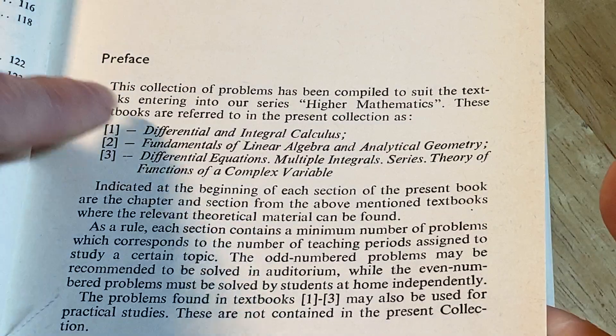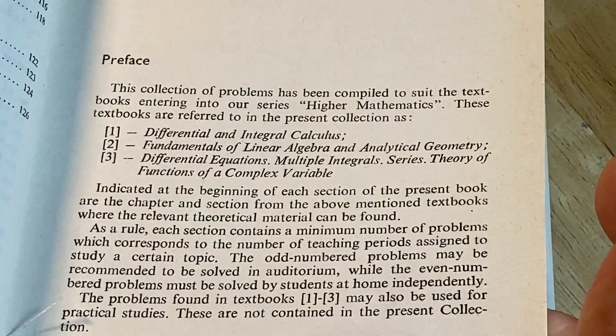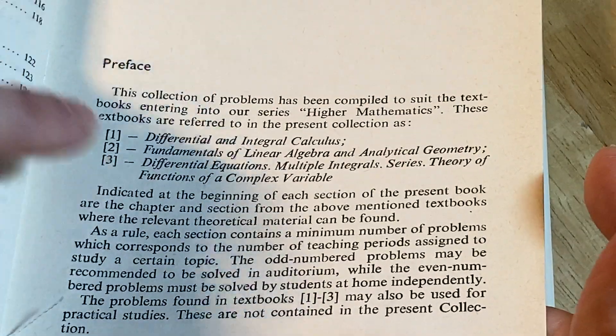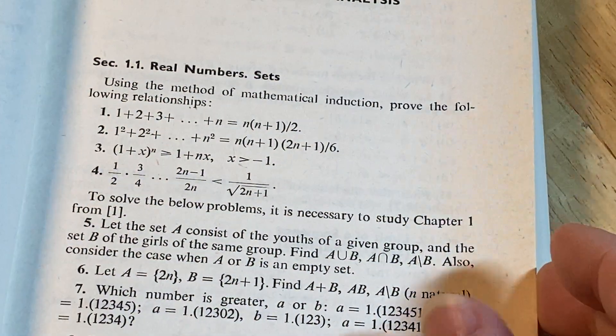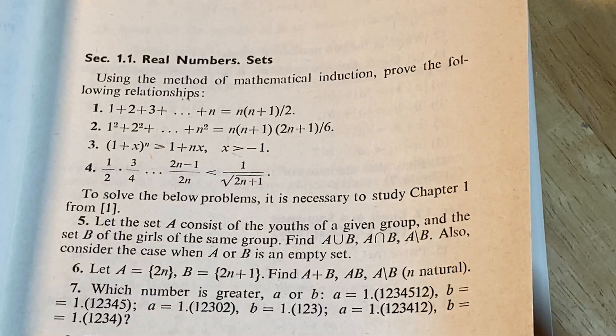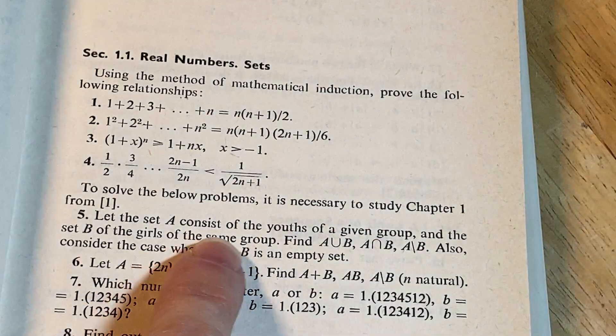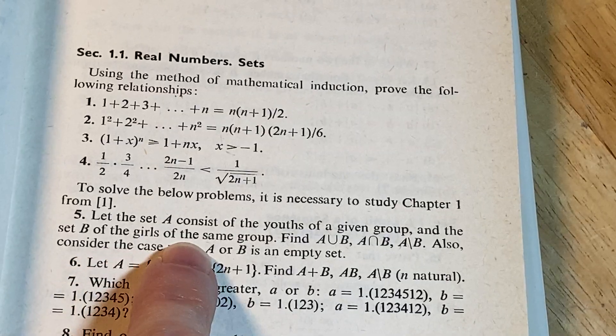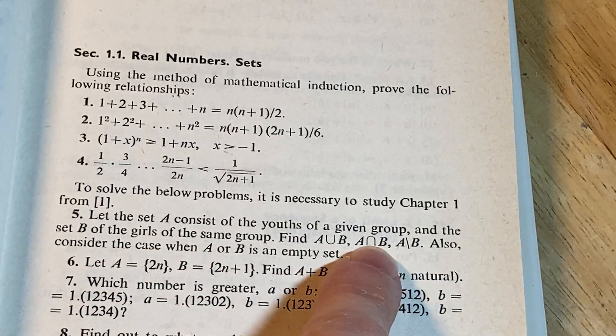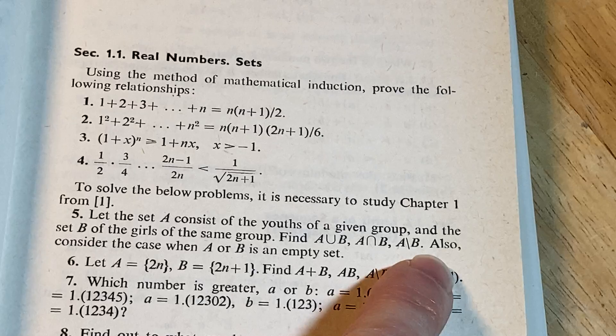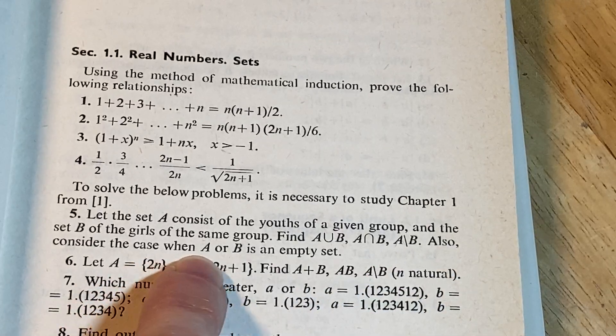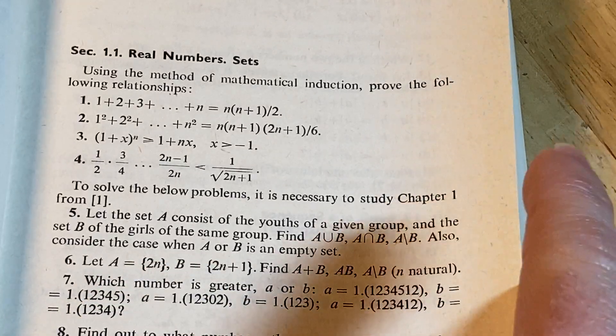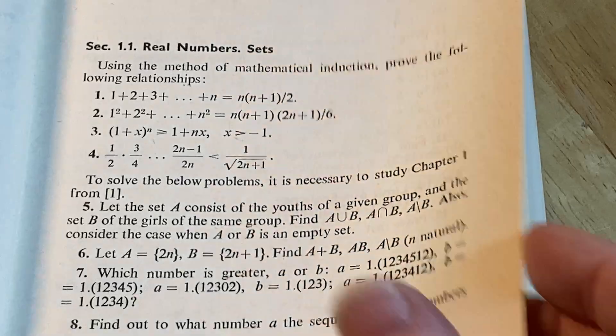So this other book here, Differential Integral Calculus. Now these books are also very rare. So that's the thing. It's really hard to get these books. Let the set A consist of the youths of a given group and the set B of the girls of the same group. And then find A union B, A intersection B, A set minus B. Also consider the case when A B is an empty set. Interesting. Just some set stuff.